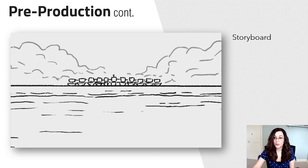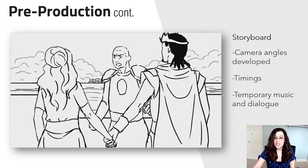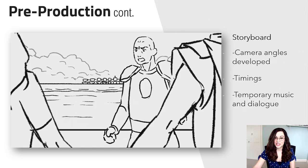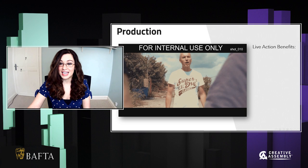Our lead cinematic artist is going to work with a storyboard artist to flesh out all those camera angles, which they then cut together to show a timed version of the trailer. They can also add in any temporary music and dialogue. Like with the script, there's going to be multiple meetings between the lead cinematic artist and the rest of the team as these storyboards develop. And again, when the heads of marketing are happy, we're ready to move on to our next stage, which is production.